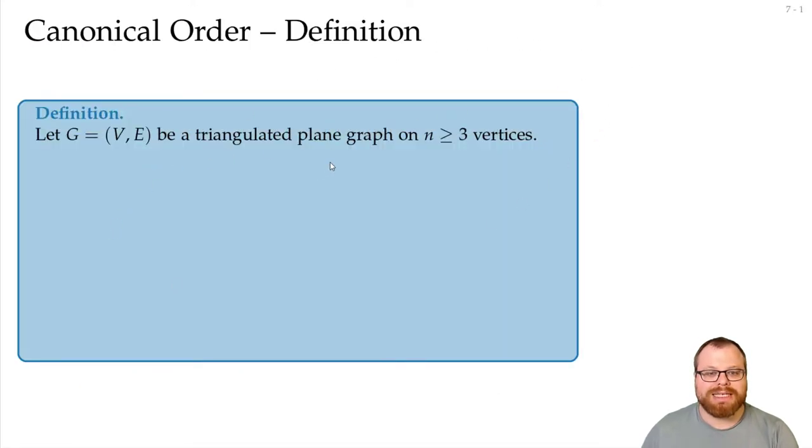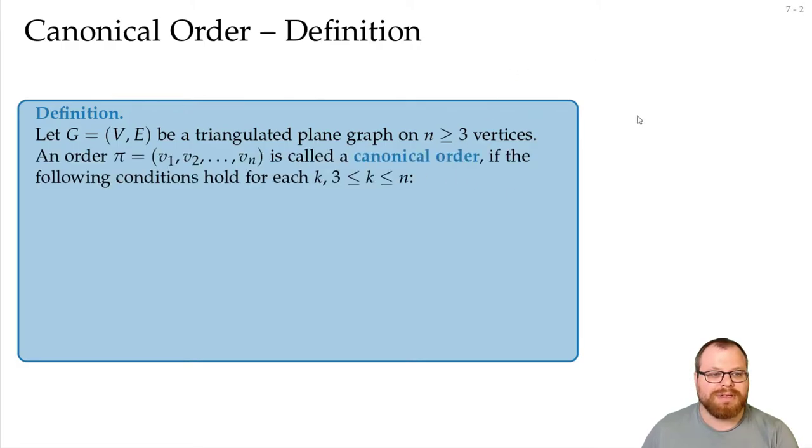Let's say we have a triangulated plane graph and we have at least three vertices. We call an order, which is just a permutation basically of the vertices or a numbering of the vertices from 1 to n, is called a canonical order if three conditions hold for every k between 3 and n.